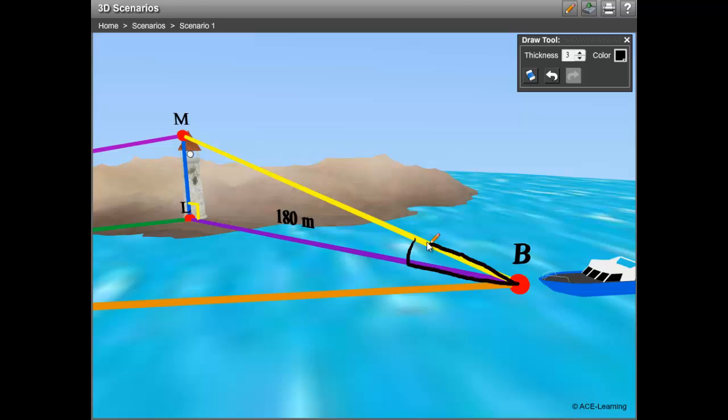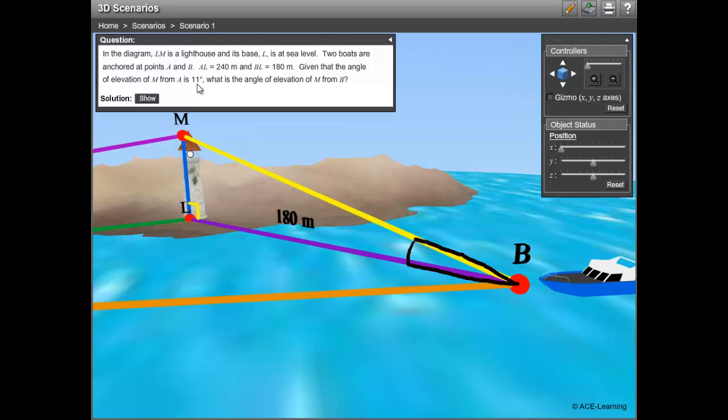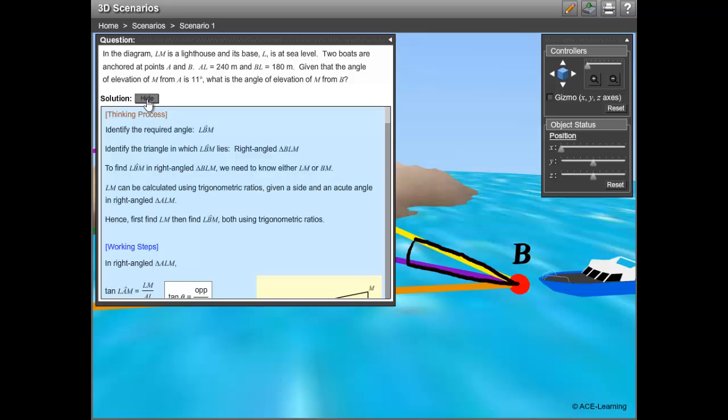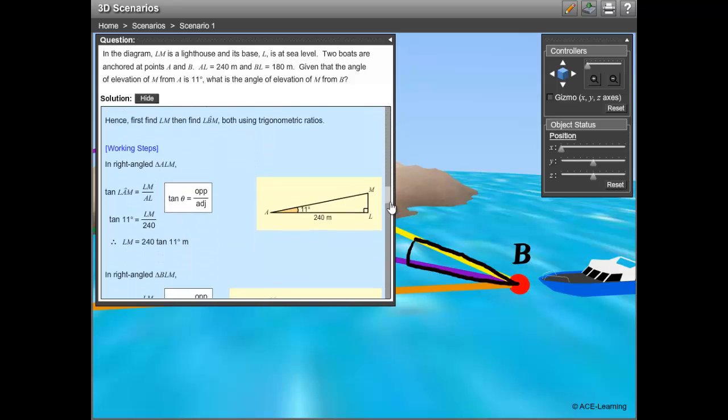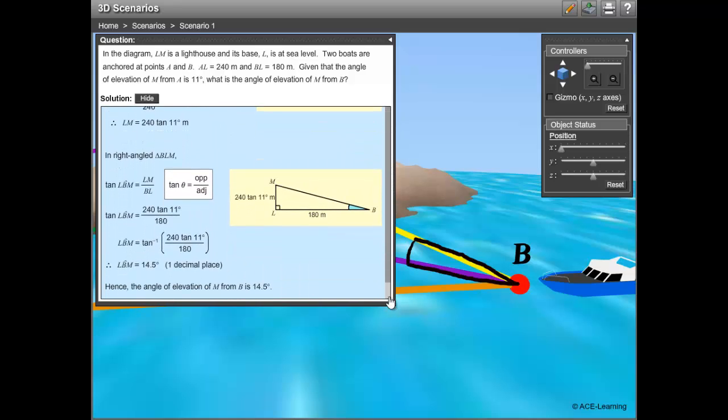Now for the solution. Here, there is a unique feature which other systems do not have: thinking process. Before any attempts on problem solving, the thinking process is crucial. Students need to understand the problem, identify what they are required to find, and manipulate the given information to solve the problem.